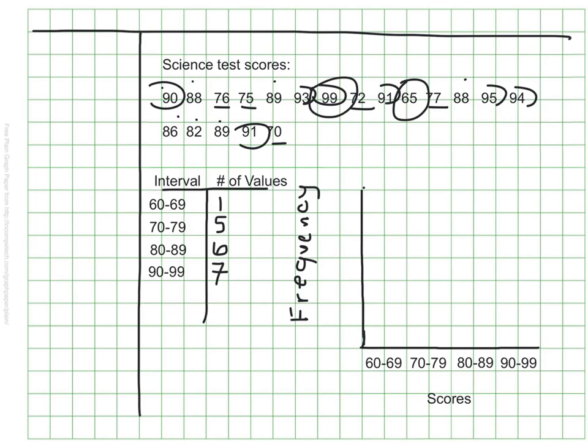According to my table, my highest frequency, the numbers that come up the most often, are in the 90 to 99 range, and there are 7 of those. So I need to make sure that my frequency goes up as high as 7. And of course, we don't want to forget a title. I'll just call this science test scores.